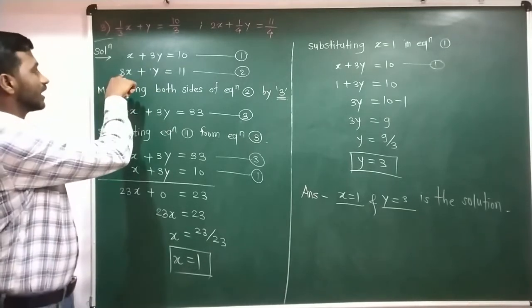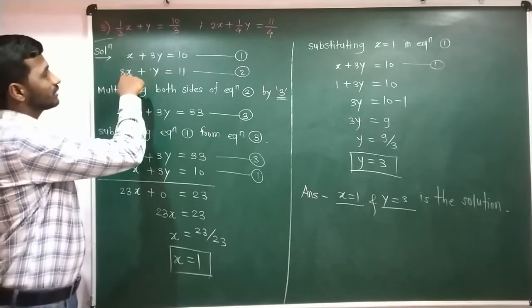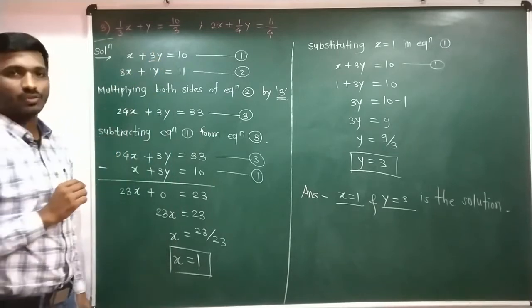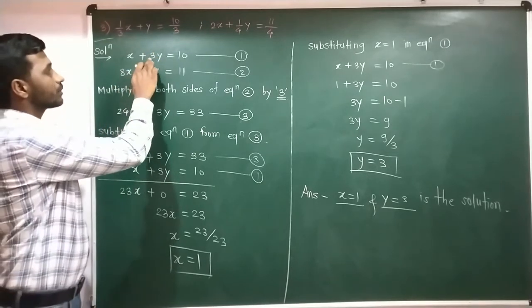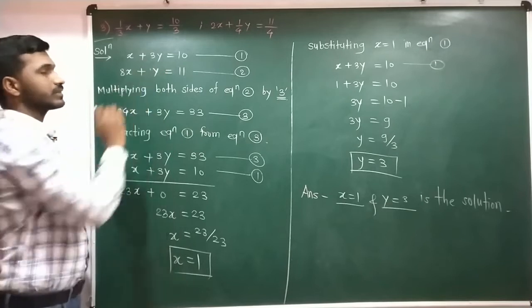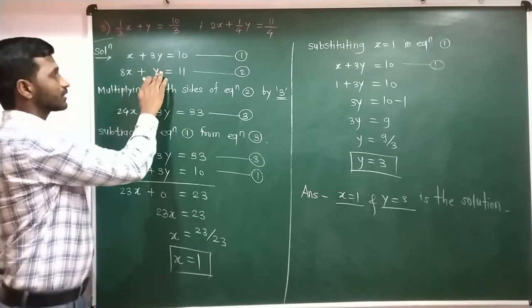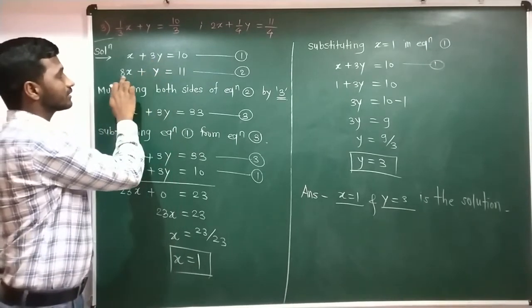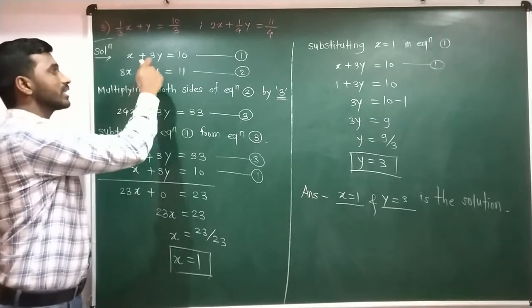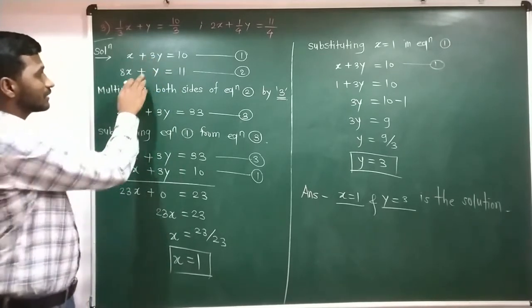If we check and compare, y is the same. If y is the same, then we multiply the second equation by 3. If we multiply 3 in the second equation, then the second equation is modifiable.